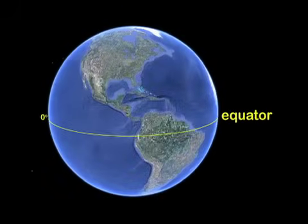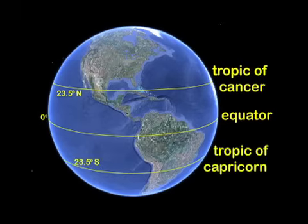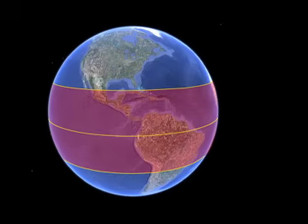The equator lies at zero degrees, halfway between the north and south poles. There are several other unique lines of latitude. The Tropic of Cancer lies at 23.5 degrees north and the Tropic of Capricorn lies at 23.5 degrees south. The part of Earth between these lines is called the tropics.